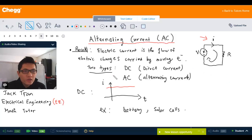There are two types of current: one is DC, which we studied before—direct current—and now we study AC current.